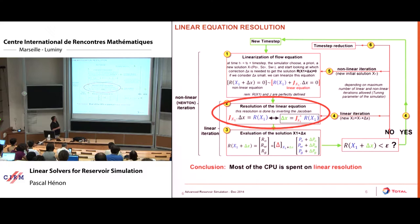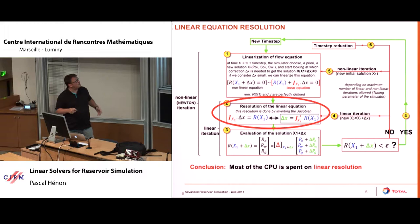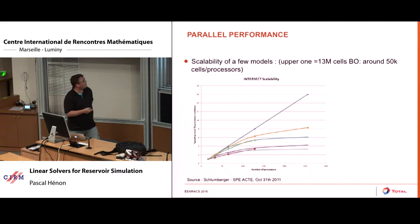We use a very classic implicit simulation scheme. The implicit unknowns are the pressure and the saturation. In some situations it is possible to use an explicit scheme, for example when we have complex physics and we know time steps do not violate the CFL condition. But most of the time on a real reservoir field, we use a fully implicit scheme. You have a Newton loop, and inside this loop, after you have linearized your equations, the most CPU time-consuming stage is the solving of the linear system.